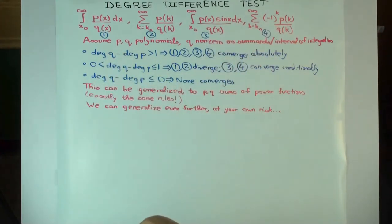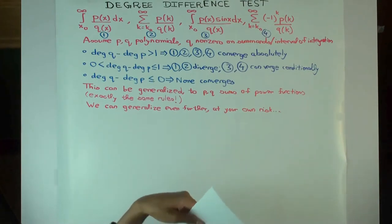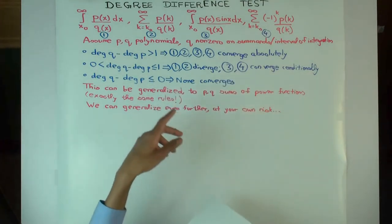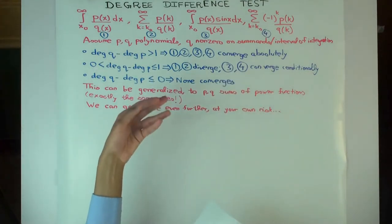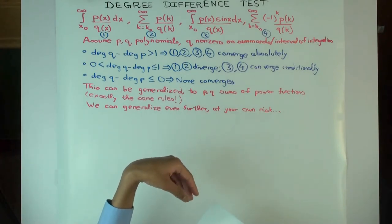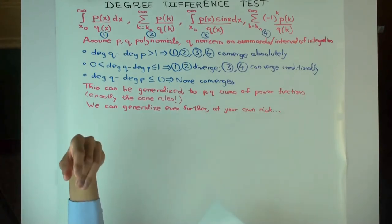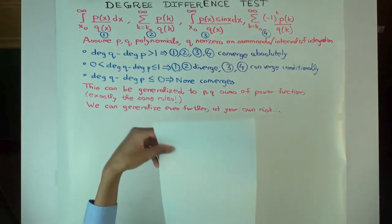And this is what the rule says. And you can watch that video to learn more. Now what I want to say here is that you can actually generalize this a bit to situations where p and q are not polynomials, but they are sums of power functions.